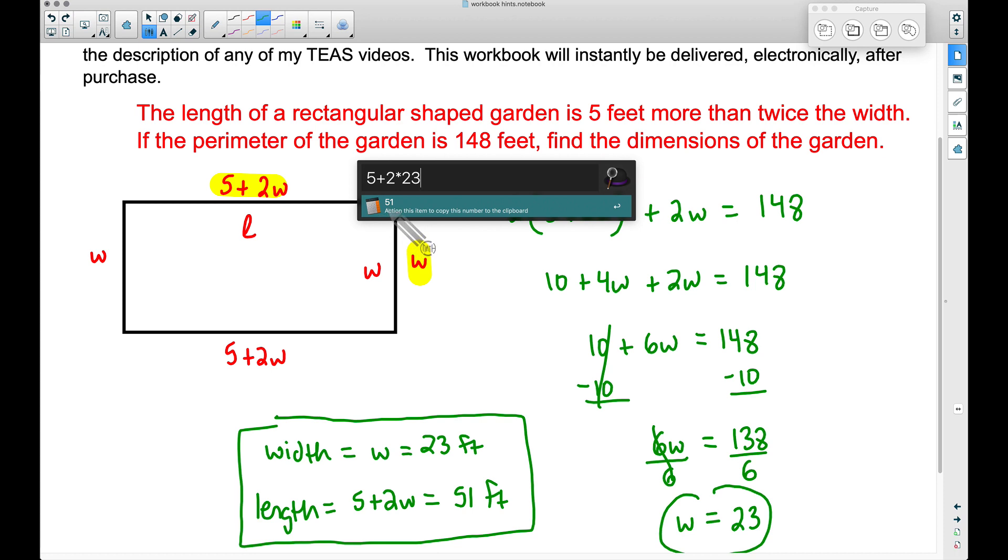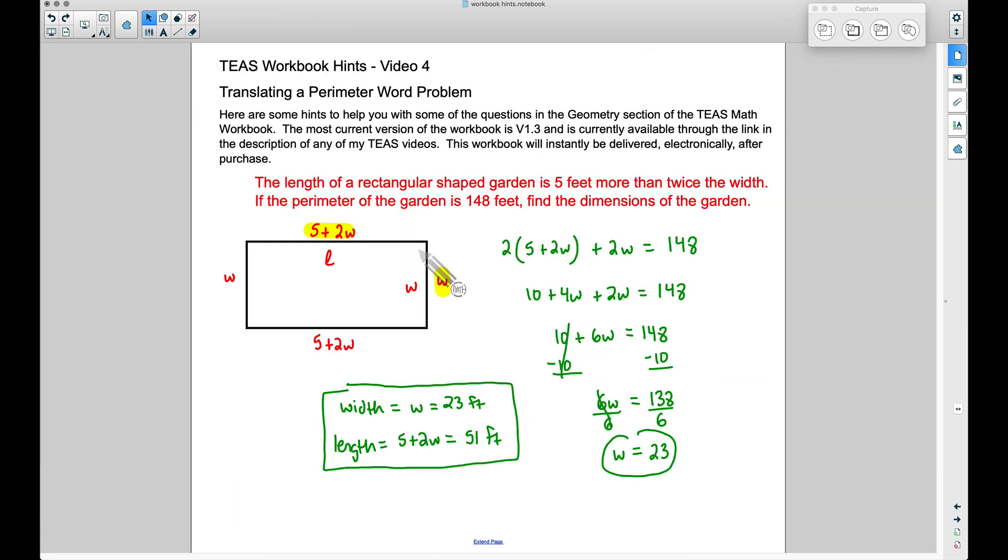There you have it: translating a perimeter word problem using a little bit of algebra, some geometry, maybe a new approach to finding the perimeter of a rectangle—2 times the length plus 2 times the width equals the perimeter. Or you could simply add up all four sides. If you have any questions, leave a comment below.